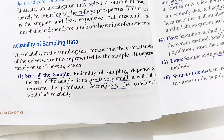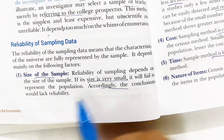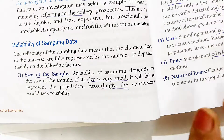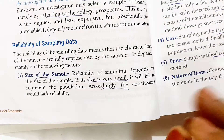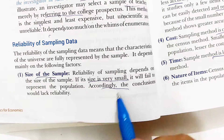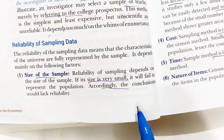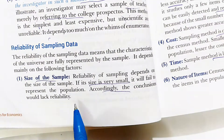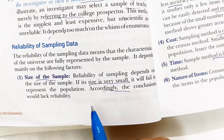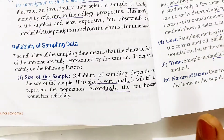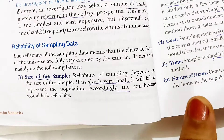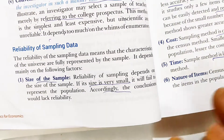Number one is the size of sample. The reliability of the sampling depends upon the size of sample. If the size of sample is very small, the sample is not able to represent the whole population and the conclusion will not be reliable. The size of sample must be appropriate so that the whole population could be represented.